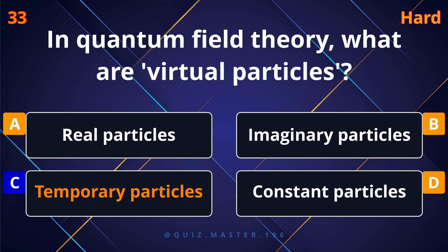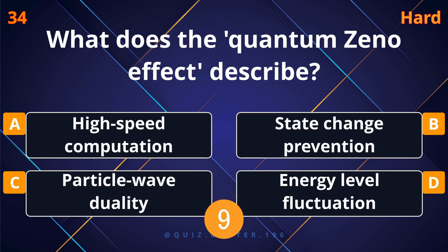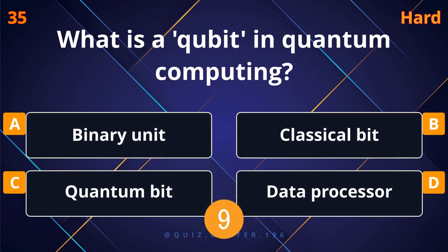In quantum field theory, what are virtual particles? Temporary particles. What does the quantum Zeno effect describe? State change prevention.